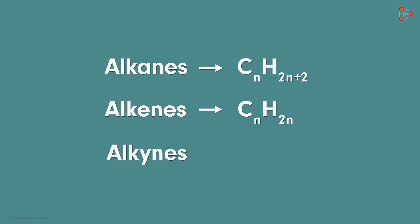We know the formulas for alkanes and alkenes now. Can you guess the formula for alkynes? It is CnH2n-2.